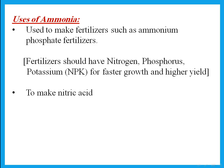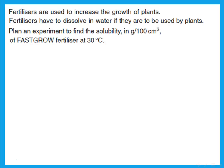Ammonia is used mainly to make fertilizers. Fertilizers such as ammonium phosphate are made from ammonia. Fertilizers are substances added to soil so that plants grow faster. Fertilizers should include three main elements: nitrogen (N), phosphorus (P), and potassium (K) — known as NPK — for faster growth and higher yield. Nitrogen and phosphorus are non-metals; potassium is a metallic ion. Another use of ammonia is to make nitric acid, which can then be used to make other products.